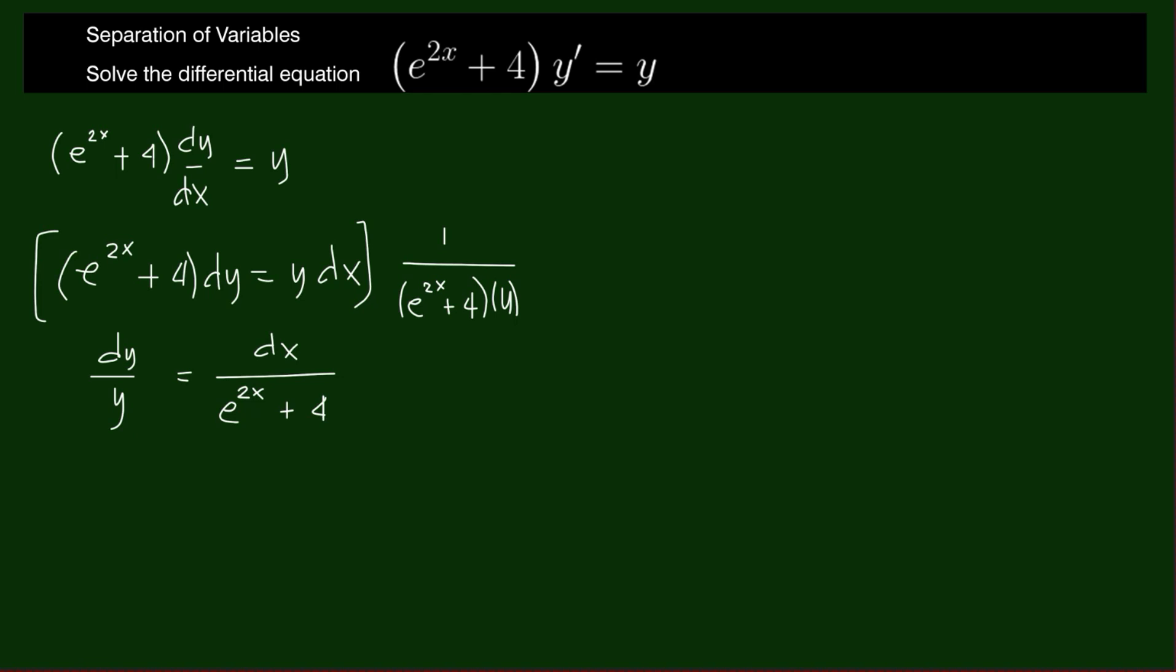We need to do some u substitution here. If we let u equals e to the 2x plus 4, our du is 2e to the 2x dx.